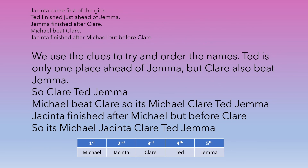We use the clues to try and order the names. Ted is only one place ahead of Gemma, but Claire also beat Gemma, so: Claire, Ted, Gemma. Michael beat Claire, so it's Michael, Claire, Ted, Gemma. Jacinta finished after Michael but before Claire, so it's Michael, Jacinta, Claire, Ted, Gemma.